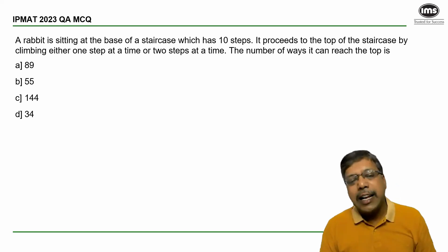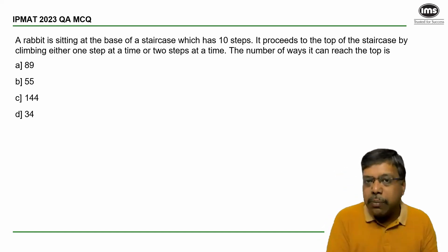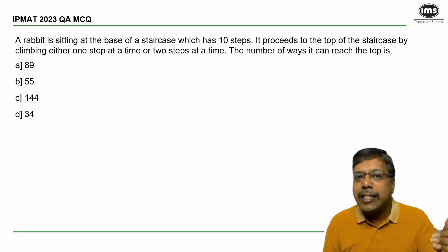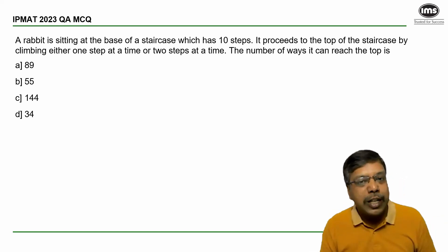Now let us consider that the rabbit covers either one step or two steps in a jump. So it can make some number of jumps in which it will cover one step each and some number of jumps in which it can cover two steps each. Totally it has to cover 10 steps.